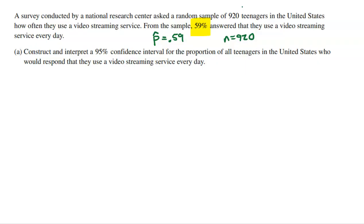They want us to utilize that information to construct and interpret a 95% confidence interval for the proportion of all teenagers in the United States who would respond that they use a video streaming service every day. So they want me to construct a confidence interval for the true P — the true proportion for all teenagers that use a video streaming service every single day.